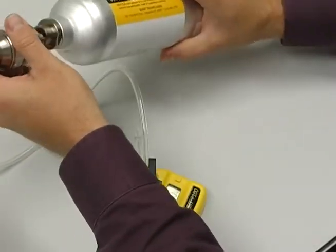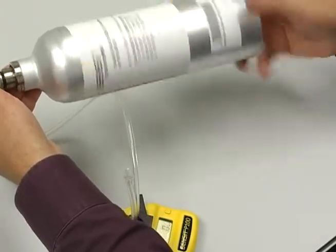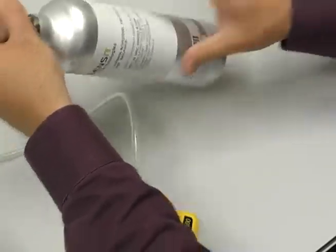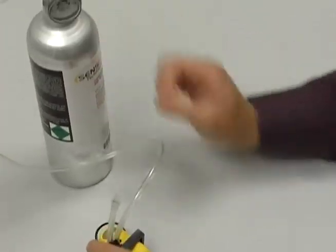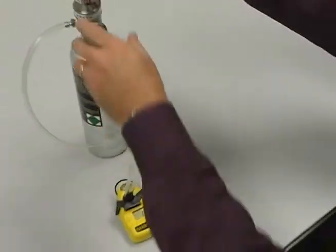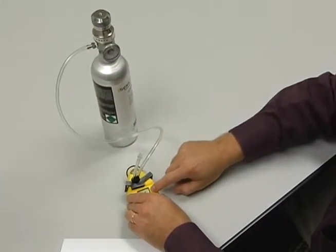Assemble the regulator onto the bottle, check the bottle to make sure that there's pressure in the bottle, and then begin the flow of gas onto the instrument and push and hold the zero button.